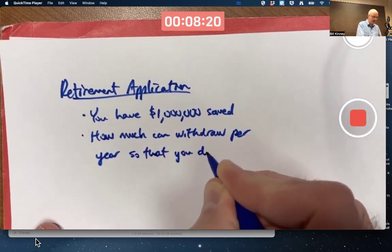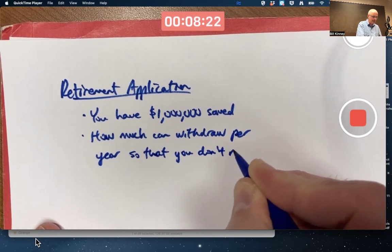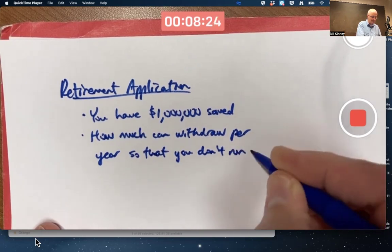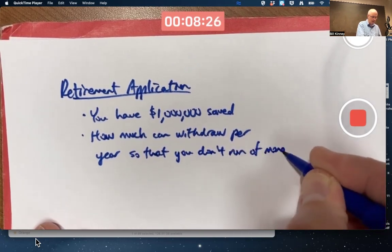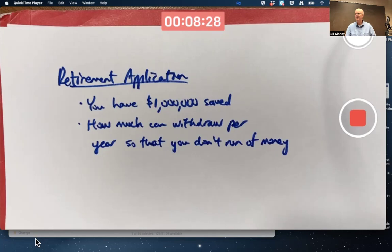Now, that question depends on many things besides having a million dollars. It depends on your cost of living. How much money do you spend? It depends on inflation. It depends on how long you live. It depends on where you have your money invested. To keep things simple again,